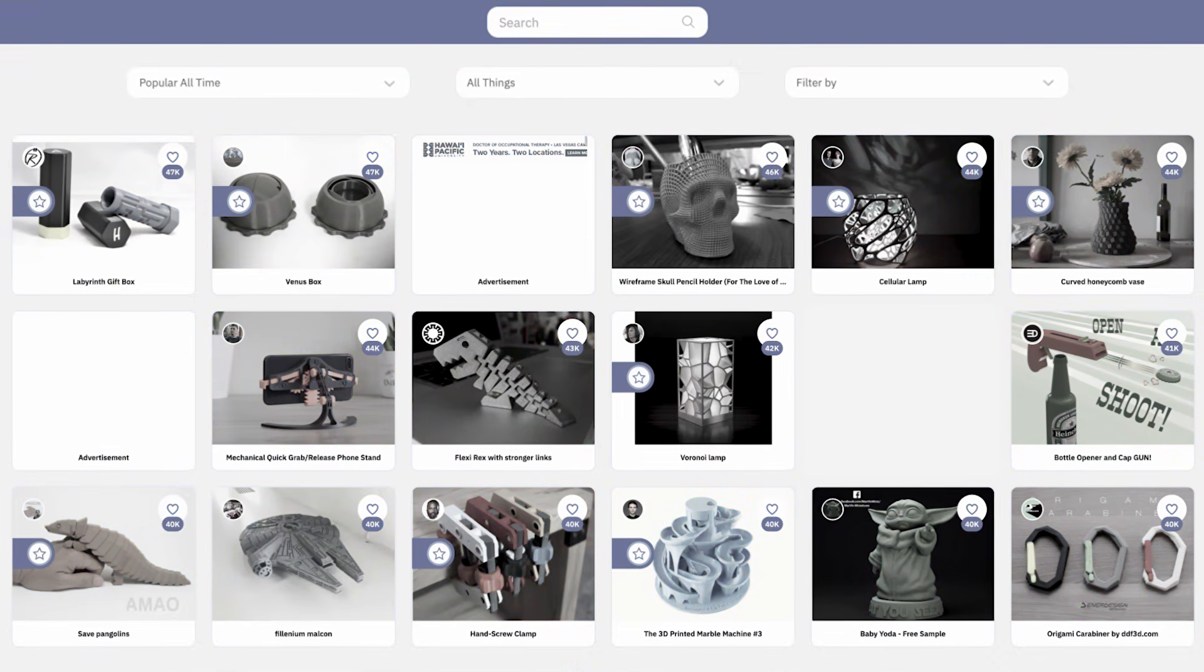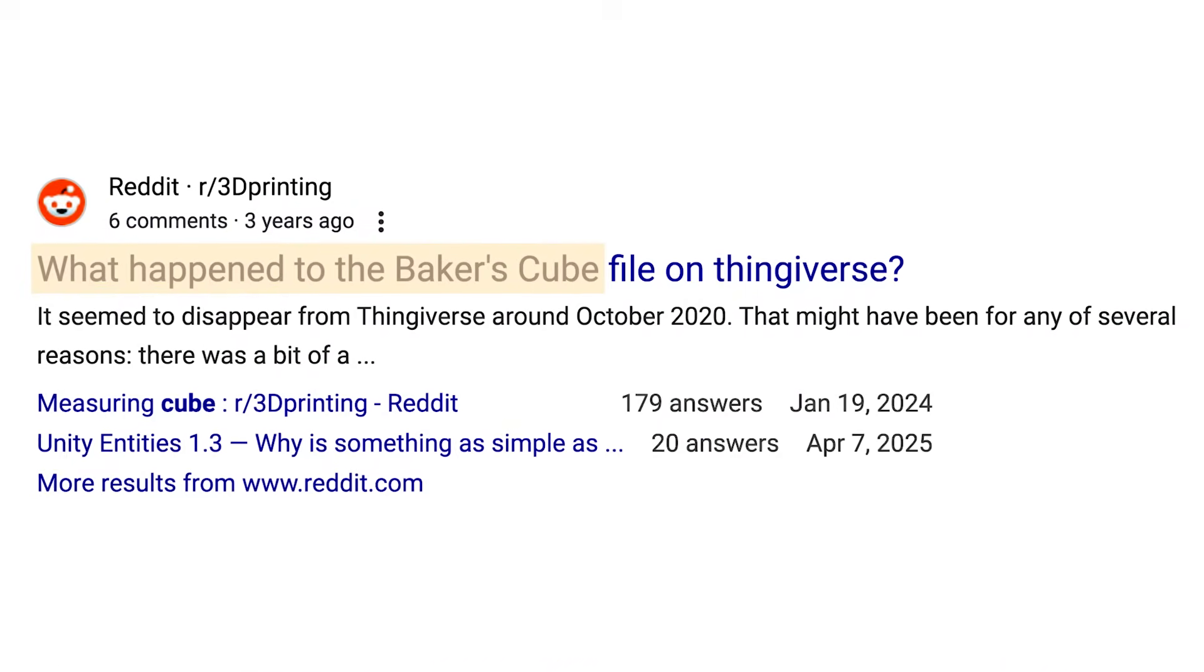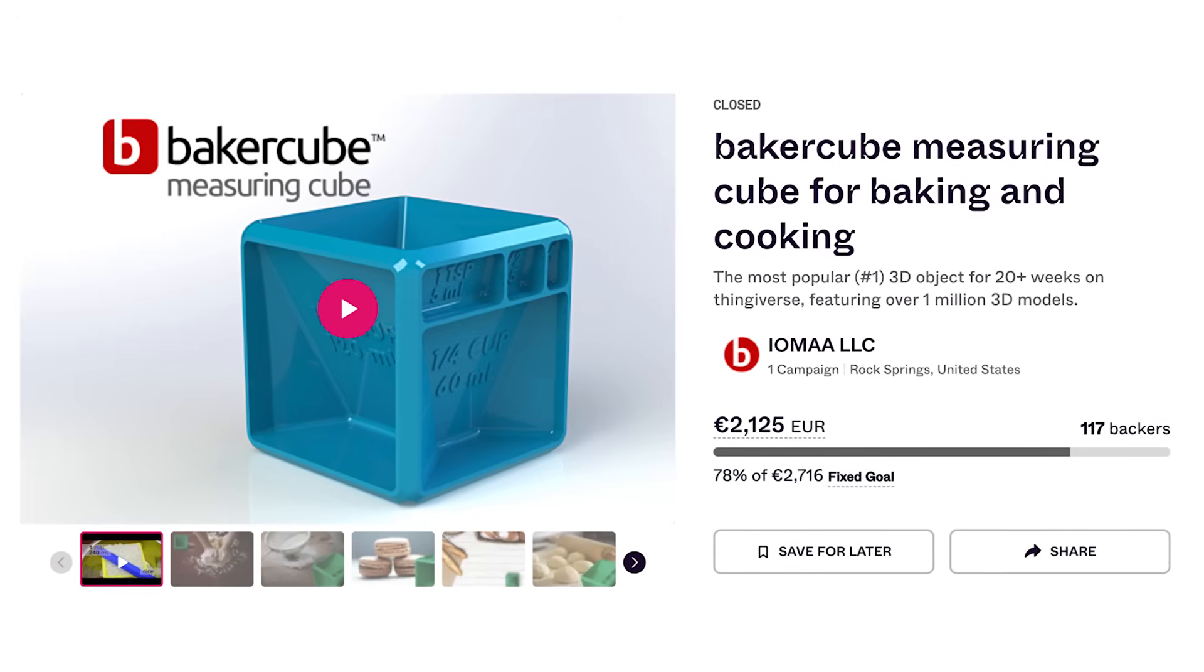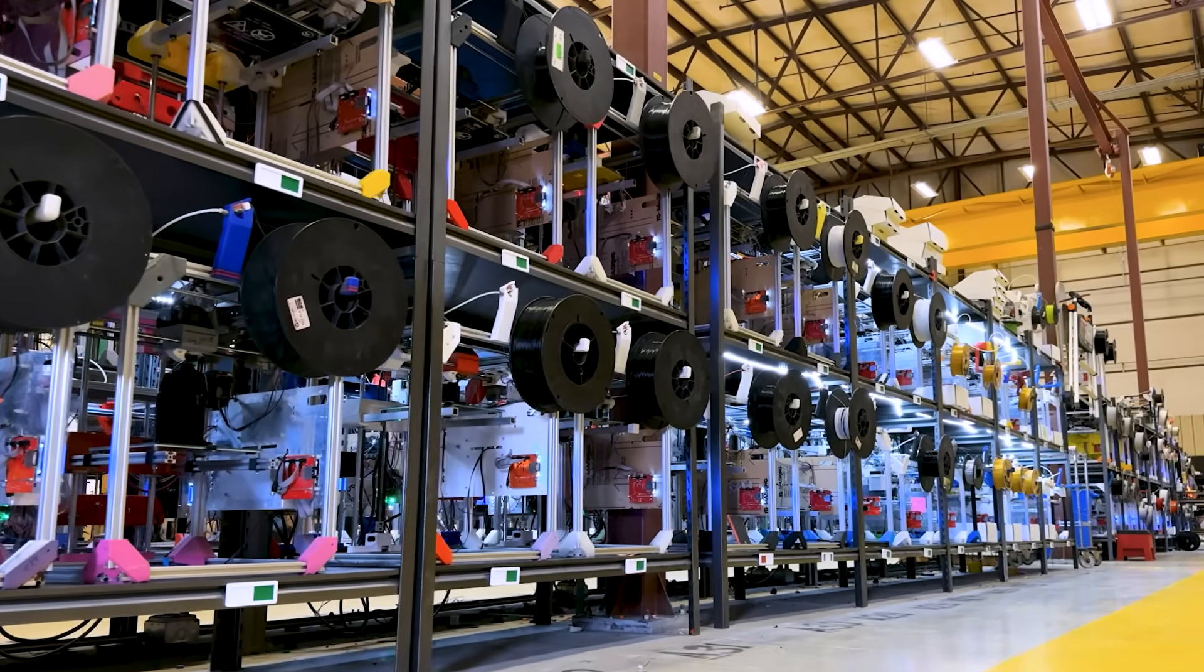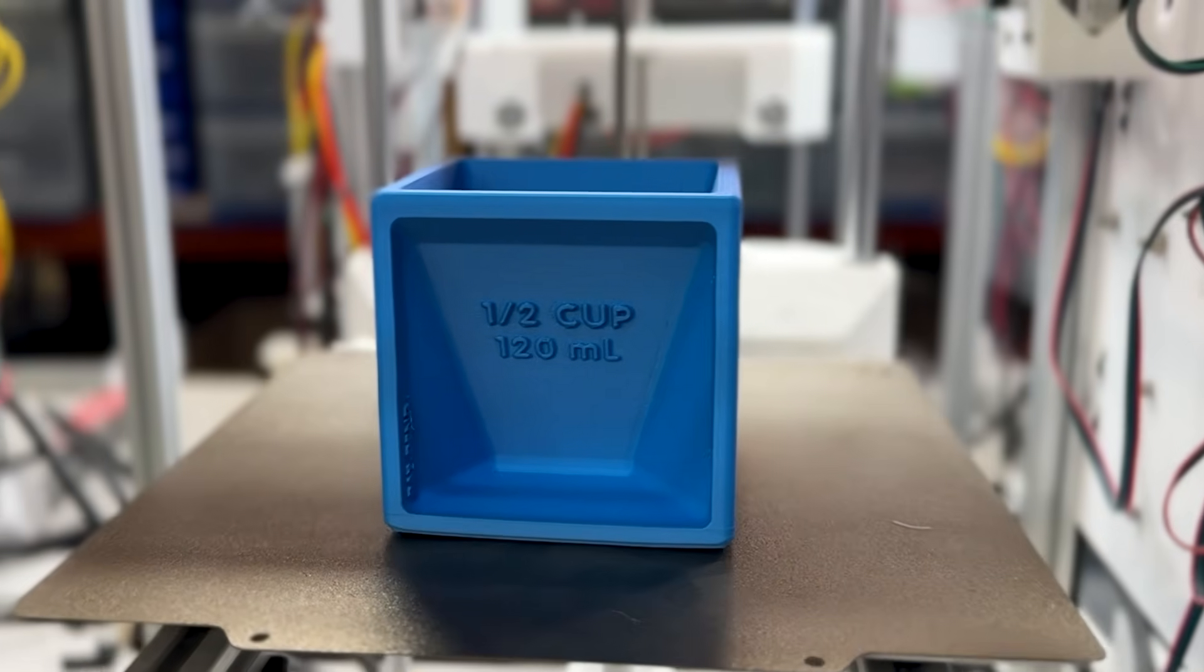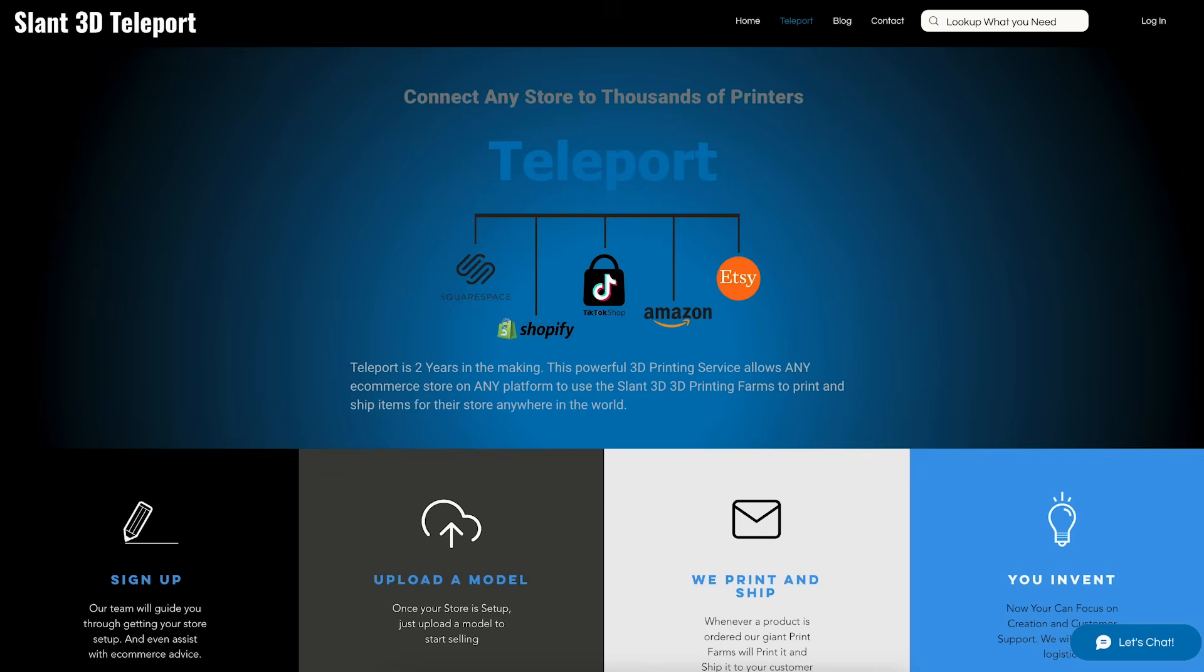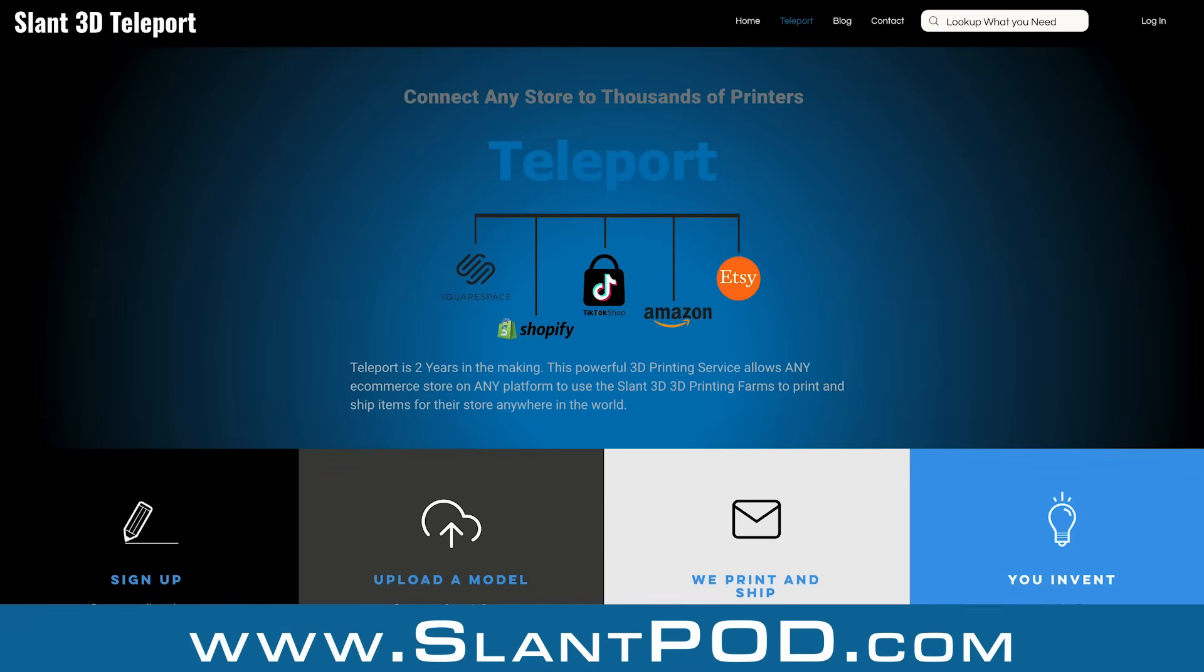Ultimately, with its popularity at that time, a year or two later it was pulled from Thingiverse and the designers went after crowdfunding to get it mass produced. If they had made it today, they could have used a service like Teleport where they could upload the model to their store and have hundreds of 3D printers make and ship items directly to customers. They never would have needed a mold or manufacturing setup. You can check out Teleport at slantpod.com.